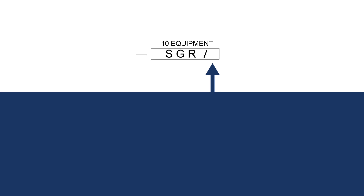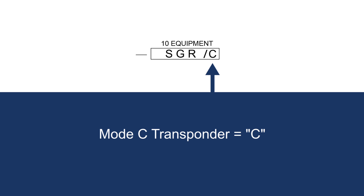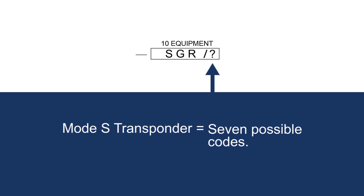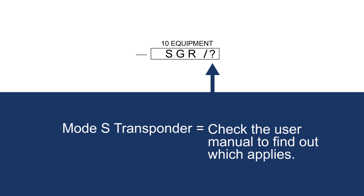To finish up Box 10, you must list your transponder equipment code on the right-hand side of Box 10, referred to as Box 10B. If you have a Mode C transponder, just enter the letter C. If you have a Mode S transponder, there are seven different codes that may apply to you. Your best bet is to check with the user guide for your particular model to find out which code applies.